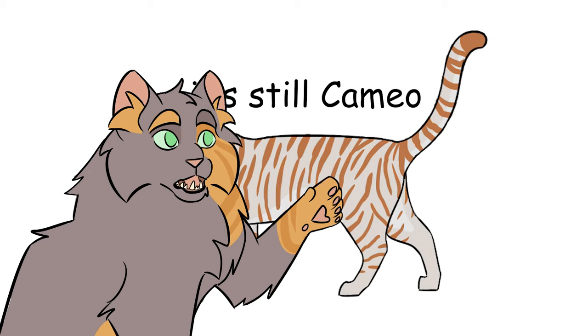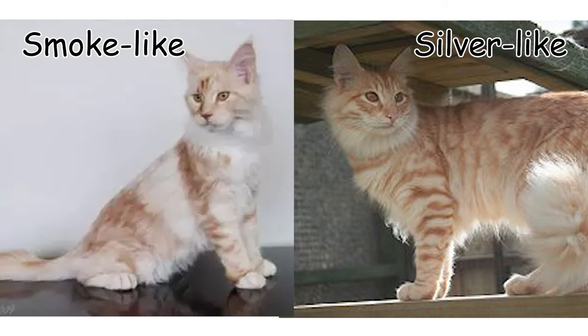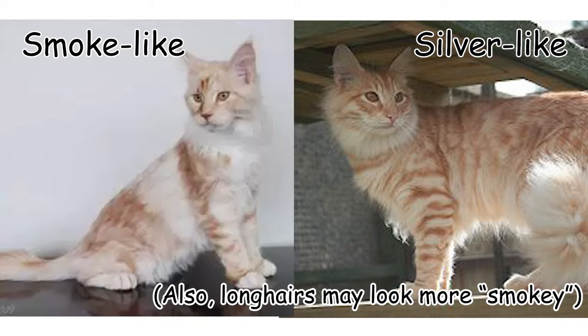Remember, all ginger cats are phenotypically tabbies, even when they don't have the tabby gene. I've seen red cats with inhibitor who look more like smokes, but I think this is either selective breeding or the pattern. Ticked cameos are more likely to look smoky, for instance.